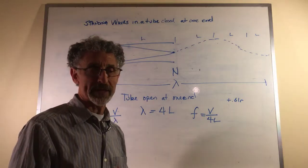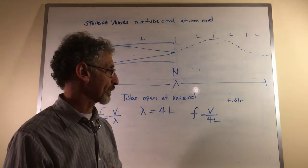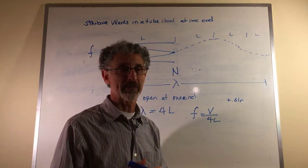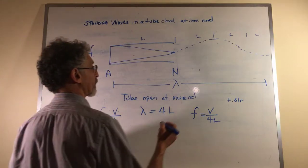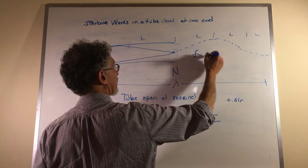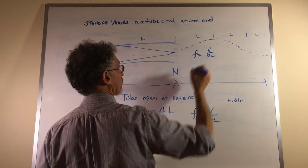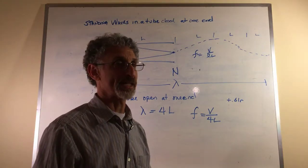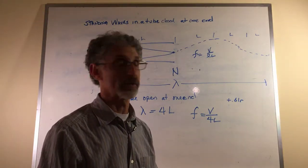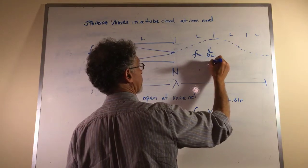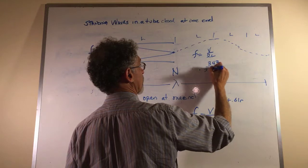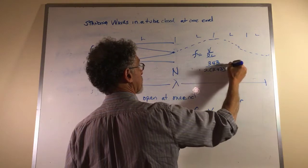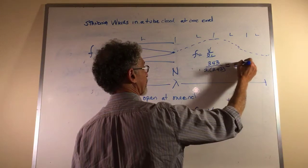Now there's something very interesting about this. First of all, let's think about how this affects the frequency. If we have a tube open at both ends, we have F equals V over 2L. Just to make the math very easy, let's say that it's 3.43 meters. So we have 343 over 2 times 3.43. This would equal 50 Hertz.